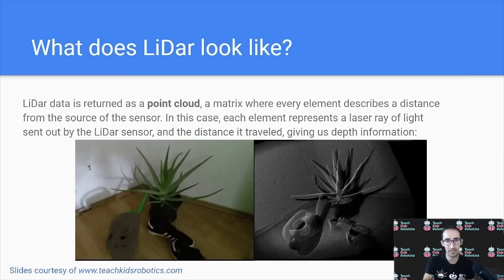Now, what does this actually look like? So this data, this laser scan information on the returned rays, can also be stored in a matrix. And this matrix is known as a point cloud, since every point or laser that is returned, gives us information about how far away, and how far that laser traveled.